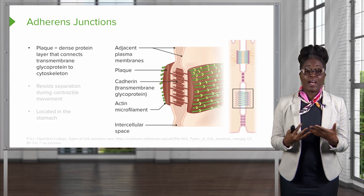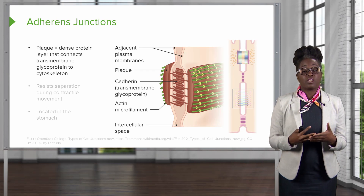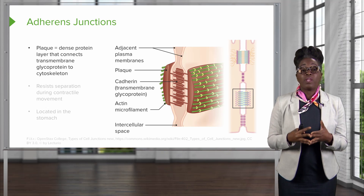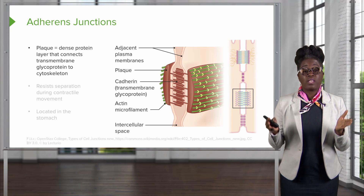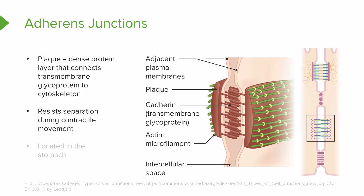The second type of junction are adherent junctions. In adherent junctions, you have a specialized structure called a plaque, which is a dense layer of proteins that connects transmembrane proteins from each of the cells to the cytoskeleton inside those cells. The purpose of these junctions is to resist separation during contractile movement, and they are found in the stomach. In these plaques, you have two types of proteins: cadherins, which are the transmembrane proteins in the membranes of each cell, and the cytoskeletal element associated with the cytoskeleton is actin microfilament. This is important because the different types of transmembrane proteins vary depending on the type of junction.